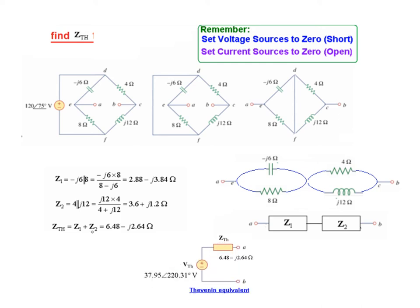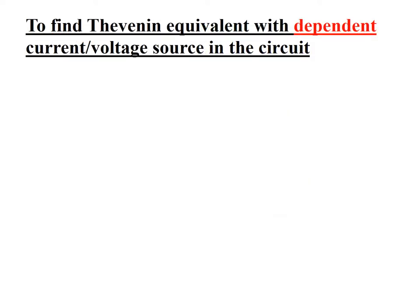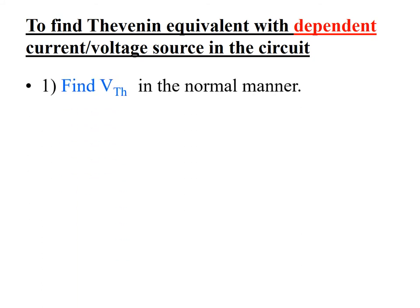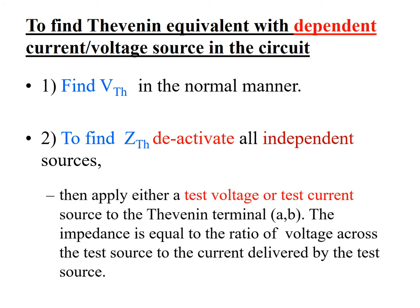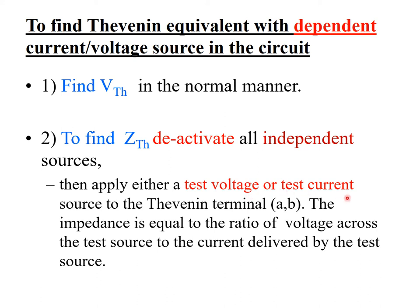This is the equivalent circuit we have for V_thevenin and Z_thevenin. Now, if you have a dependent source, how do you find the Thevenin equivalent? The technique is: find V_thevenin in the normal manner, but to find Z_thevenin, deactivate all independent sources and connect a test voltage or test current source to find Z_thevenin. Let's see this with an example.